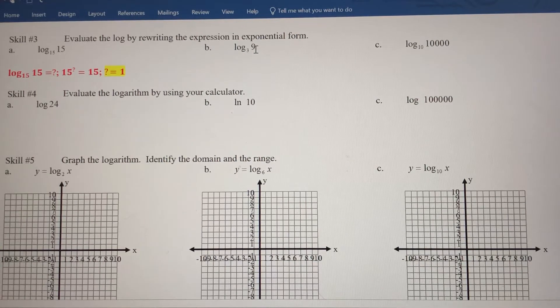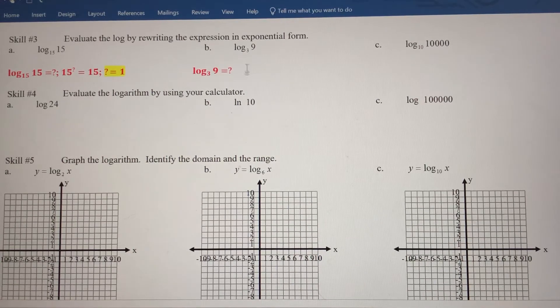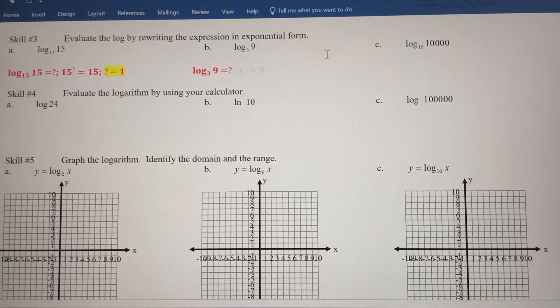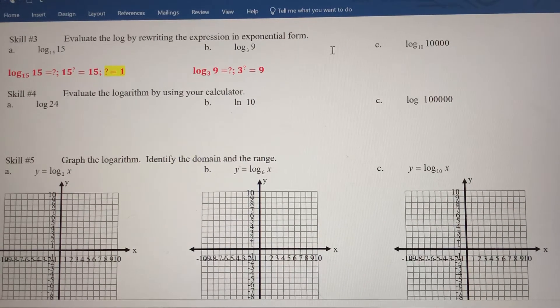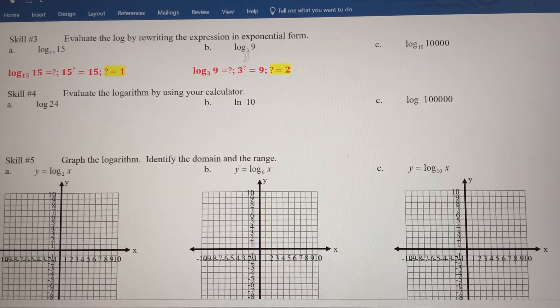So we've got log base 3 of 9. So first off, let's write it using an unknown here, a variable. I'm going to stick with the question mark. So log base 3 of 9 is equal to something. Let's rewrite this in exponential form. So 3 to that unknown power equals 9. So ask yourself, 3 to what power is 9? Hopefully you came up pretty quickly with the answer 2. So if we were to evaluate log base 3 of 9, the answer is 2.